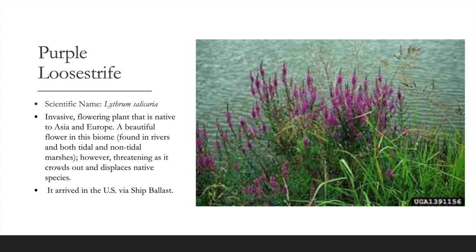First, we have the purple loosestrife. It is a very invasive flowering species from Asia and Europe found in both tidal and non-tidal marshes and rivers. It is threatening and displacing native species, but it's a nice flower to observe on this trip. It arrived via ships.